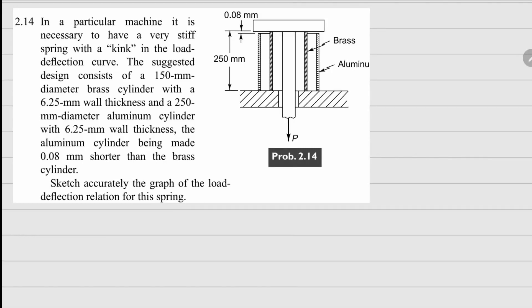This one is problem 2.14. Here for a particular machine we have to design a very stiff spring which has a kink. What do we mean by this kink here? Generally when you plot a spring load displacement curve, if this is your force and this is your delta, you expect a linear behavior in this manner.